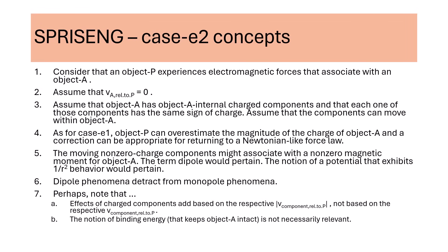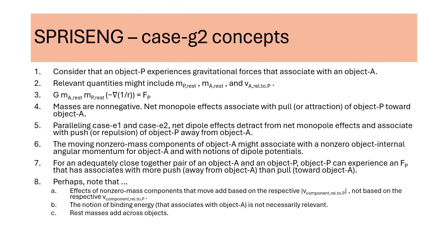KC2 assumes that object A does not move relative to object P and that object A has a non-zero magnetic moment that associates with motions of charges within object A. Again, special relativity suggests that object P overestimates the rest charge of object A. Magnetic moment associates with dipole effects; charge associates with monopole effects. Here dipole phenomena detract from monopole phenomena. Also, we note that notions of binding energy regarding object A are not necessarily relevant. Case G2 suggests, for gravity, parallels to KC2. In popular modeling, an interaction between the mass of object A and the mass of object P associates with attraction — pull — of object P toward object A. We suggest that a component of gravitation associating with the object internal angular momentum of object A and the mass of object P associates with repulsion — push — of object P away from object A. Also, we suggest that working with masses and mass currents can obviate needs to consider binding energies that might associate with an object.